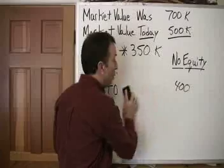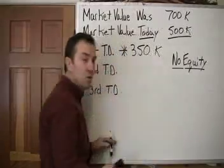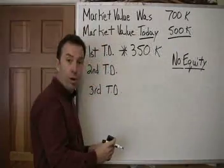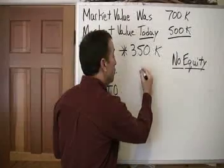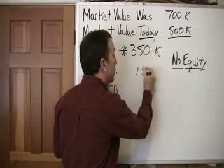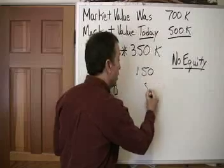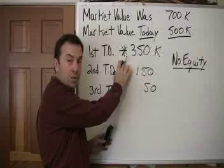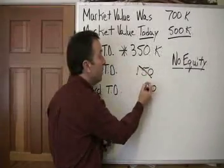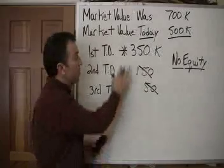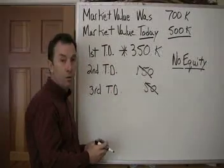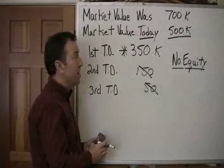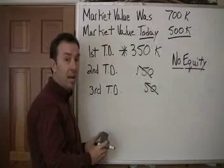If this does progress all the way to trustee sale, that's your second opportunity to buy the property. If this property owner does not accept your offer of $400,000, or the junior lenders don't agree to the short sale, let it go all the way to auction. At the trustee sale, these two lenders are wiped out completely. This property could be purchased at the trustee sale for $350,000 plus its delinquencies. That's your second opportunity to buy this property at the actual trustee sale.